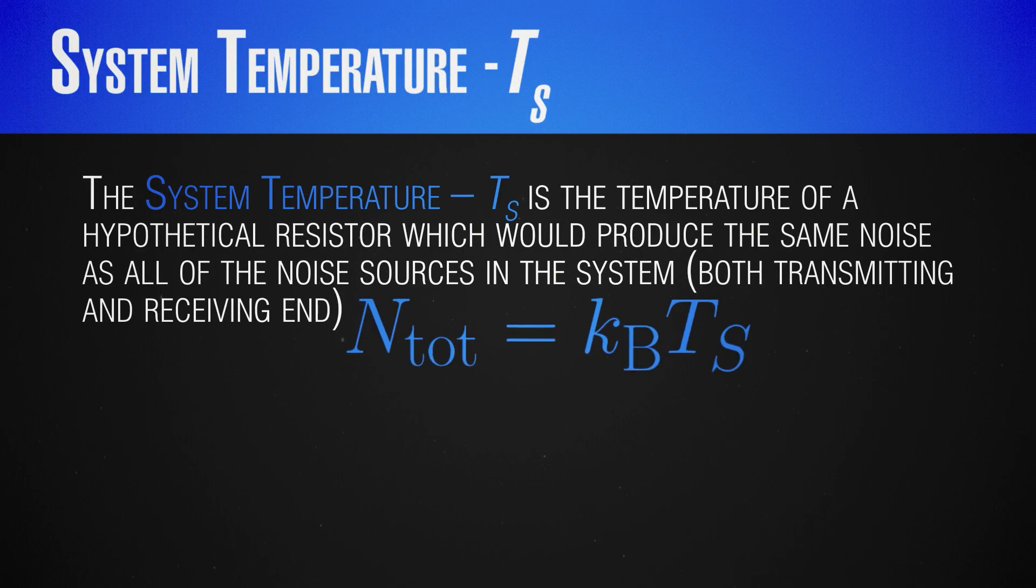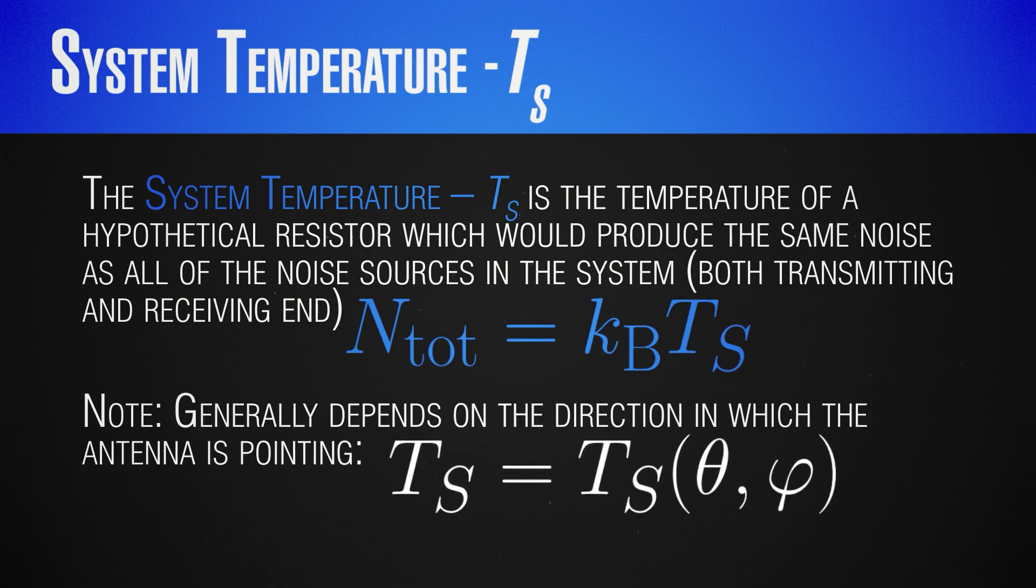Something quite similar to the antenna noise temperature is the system temperature. Essentially, it is the same idea but considering the whole system, both transmitting and receiving ends. So we model all of the noises in the system as arising from a single hypothetical resistor and we give the noise power in terms of this hypothetical temperature it would have. Naturally, we should consider the different noise sources in different directions and so this quantity will depend on our system configuration and our antenna pointing as well as generally random processes such as the cosmic emission, solar activity, etc.